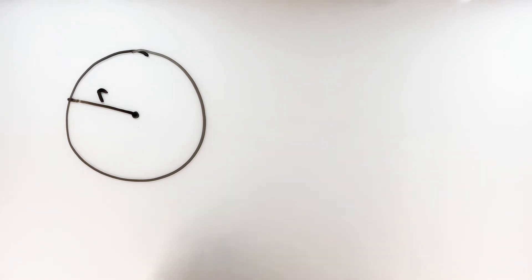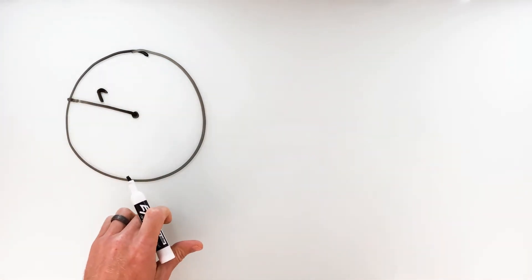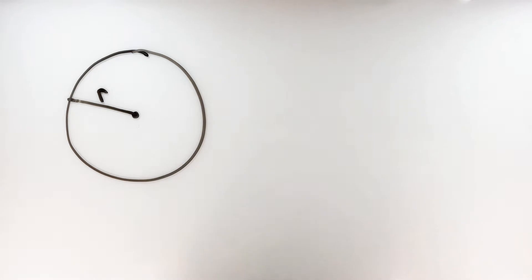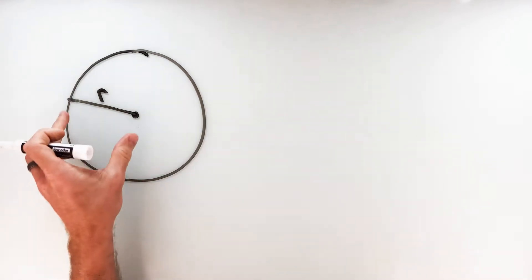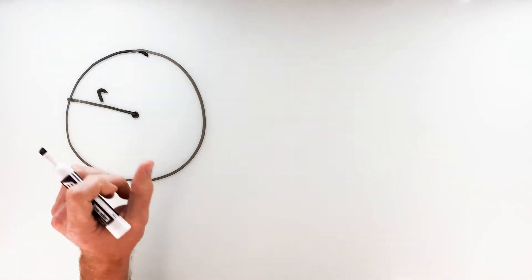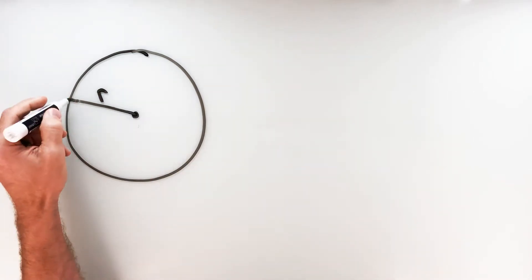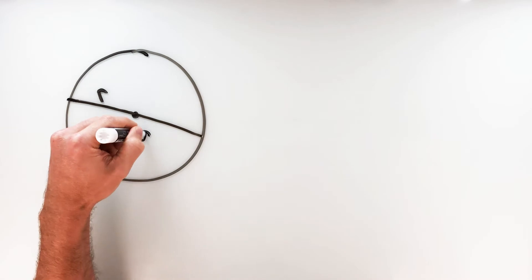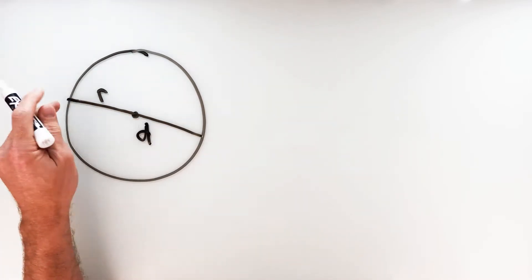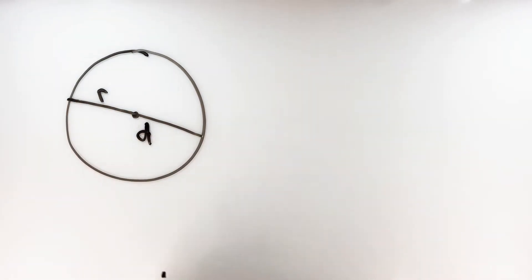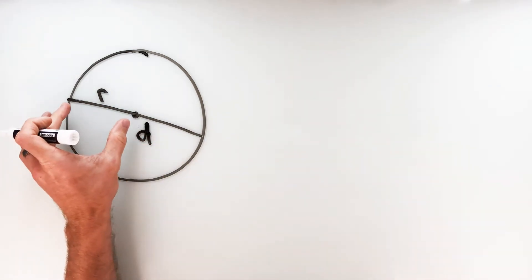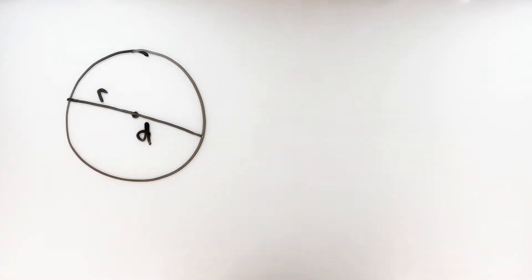Now because a circle isn't a polygon, it oftentimes plays by its own set of rules. The first of which we're going to talk about today is what we call the perimeter of a circle, or better known as the circumference — the distance around the outside of the circle. To find the circumference you need to know either the radius or the diameter, which is the distance across the circle through the center. If you know one you know the other, because the diameter is double the radius, or the radius is half the diameter.